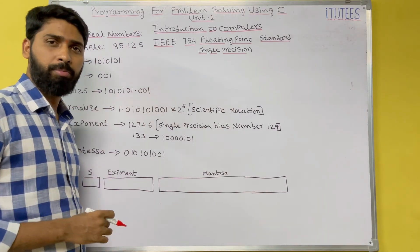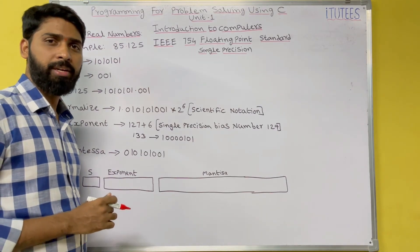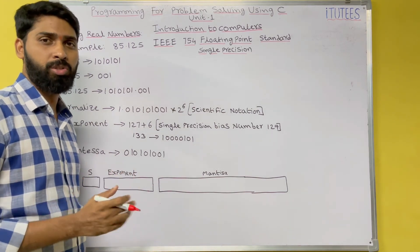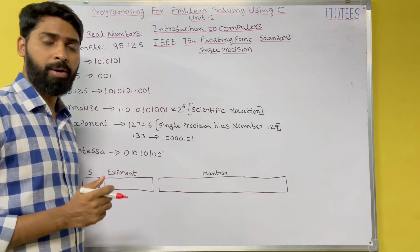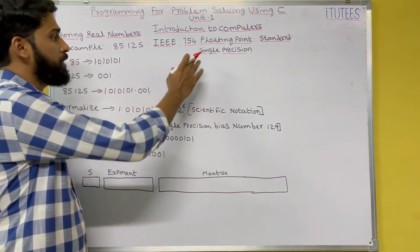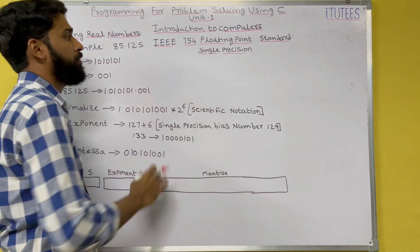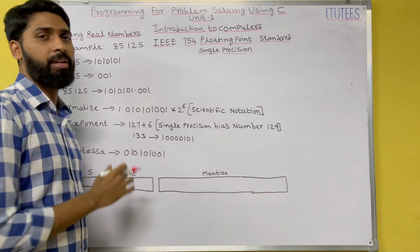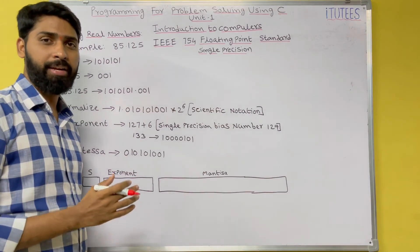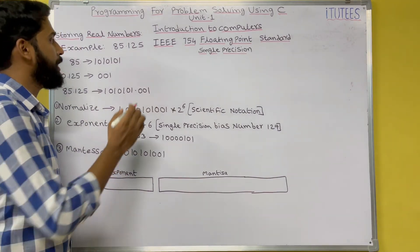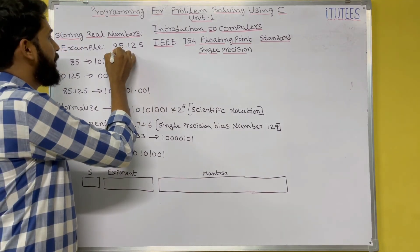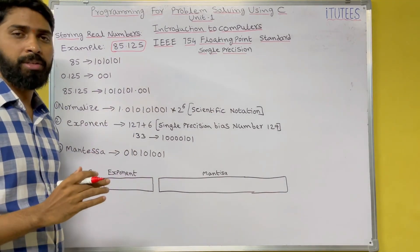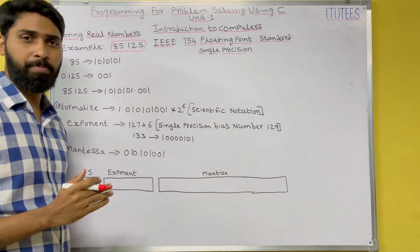Hello friends, welcome to our channel. In this class we are going to see how real numbers are stored in the computer system in single precision IEEE 754 floating point standard. It is a very important topic regarding the GATE exam. Let us take the number 85.125.